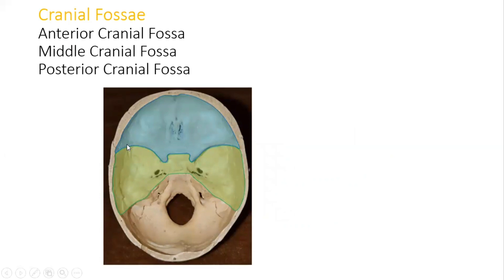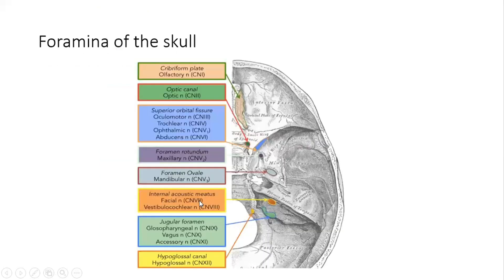Looking at the skull superiorly — at the cut inferior part of the skull — we can divide it into three cranial fossae. Going from anterior to posterior: the frontal bone is at the front and the occipital bone is at the back. The anterior cranial fossa is shown in blue, the middle cranial fossa in green, and the posterior cranial fossa — which contains the large foramen magnum — is at the back.